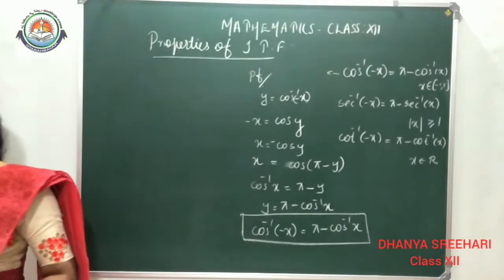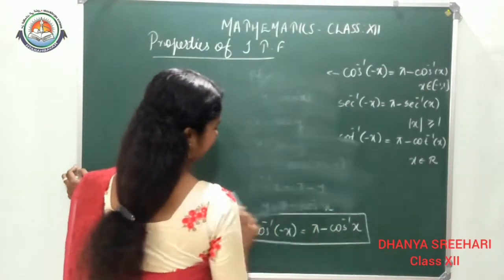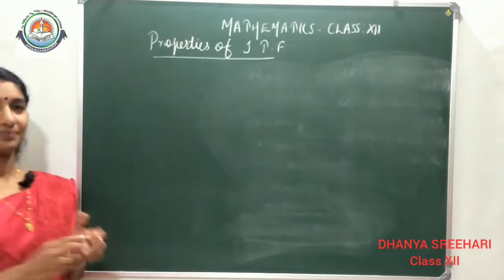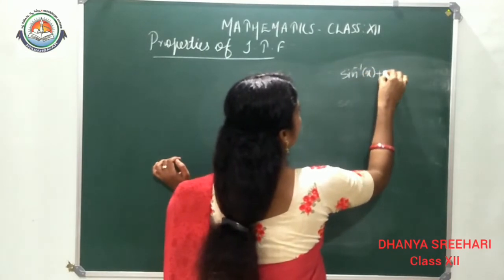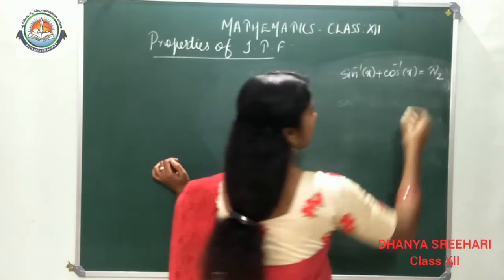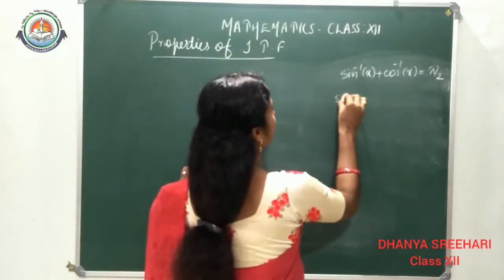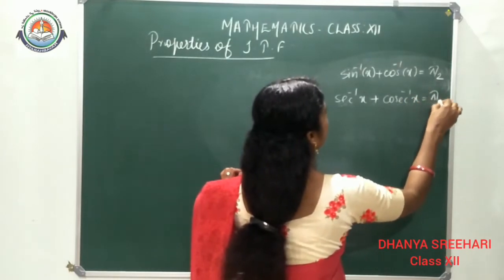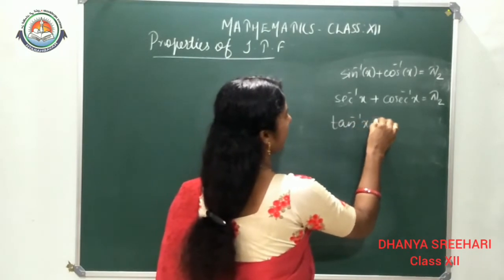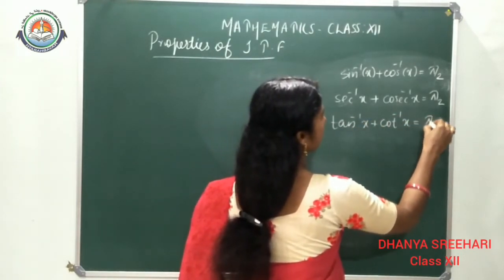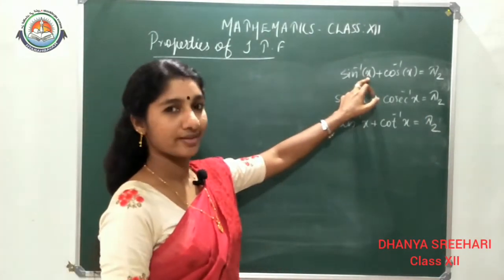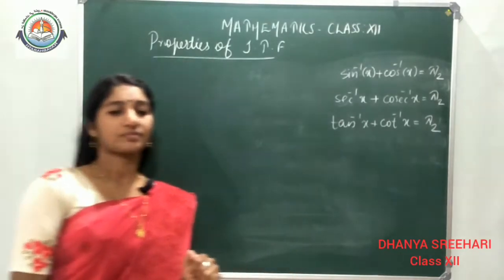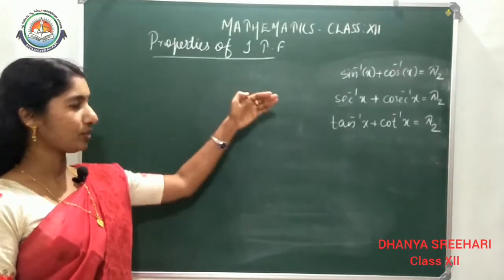The next properties are: sin⁻¹(x) + cos⁻¹(x) = π/2, where x ∈ [−1, 1]; sec⁻¹(x) + cosec⁻¹(x) = π/2, where |x| ≥ 1; and tan⁻¹(x) + cot⁻¹(x) = π/2, where x ∈ ℝ. We will discuss the first proof, and you can prove the other two the same way.